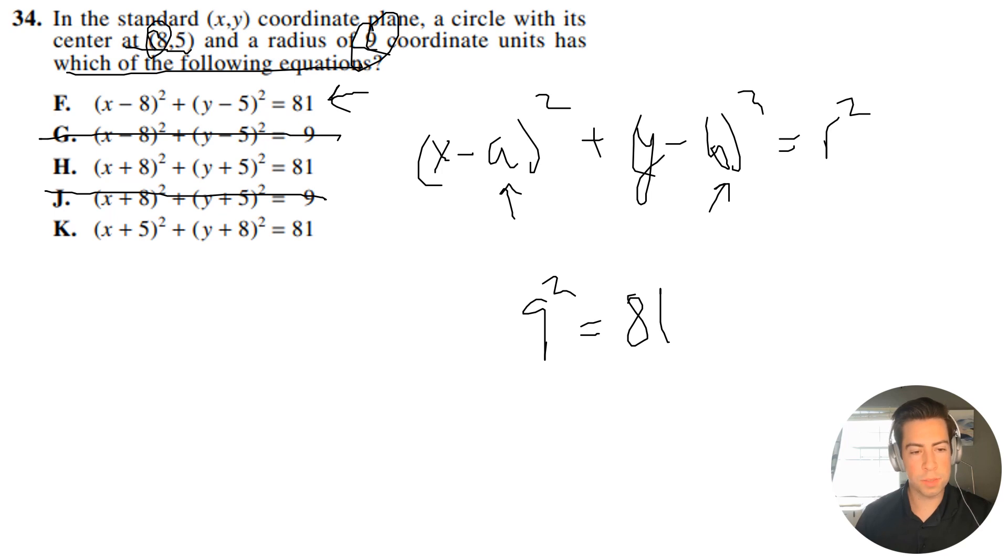The x-coordinate needs to correspond with x in the parentheses, so K is out because it has the y-coordinate with x. For our remaining options with plus or minus 8 and plus or minus 5, we know it has to be minus, so the correct answer is F.